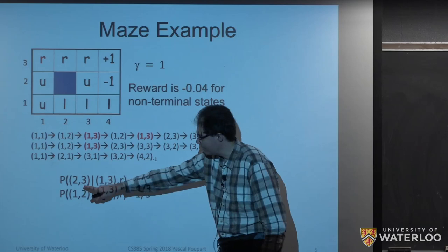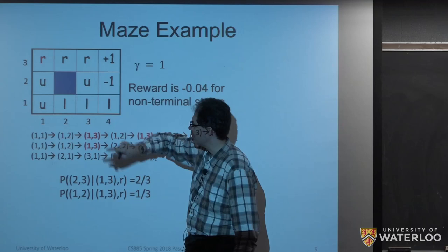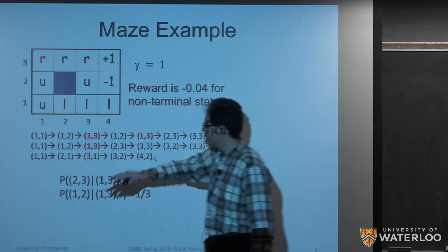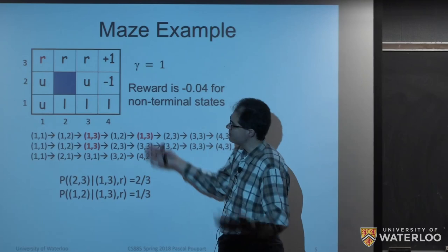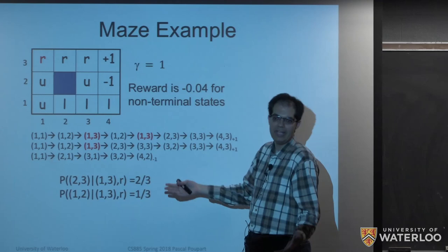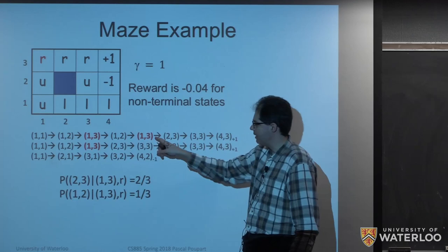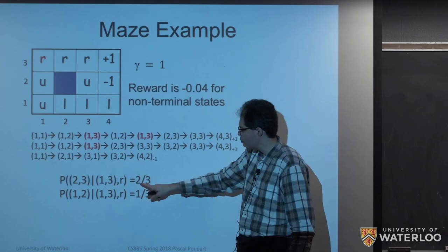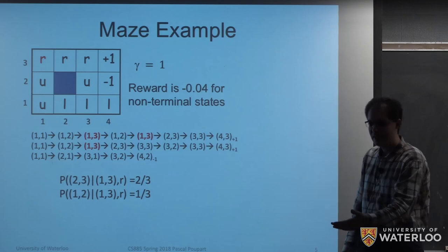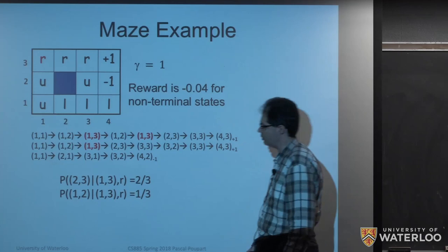For example, if I'm in state (1,3) and execute action 'right', we expect to end up in cell (2,3), but we might slip and go down instead. Looking at our trajectories, in two cases out of three we ended up in (2,3) and in one case out of three in (1,2). This gives us an estimate — we can take relative frequency counts to estimate the transition probabilities.